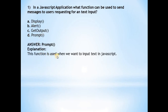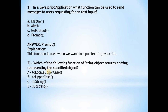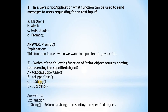The second question is: which of the following functions of the string object returns a string representing the specified object? The answer is C, that is the toString function. This returns a string representing the specified object.